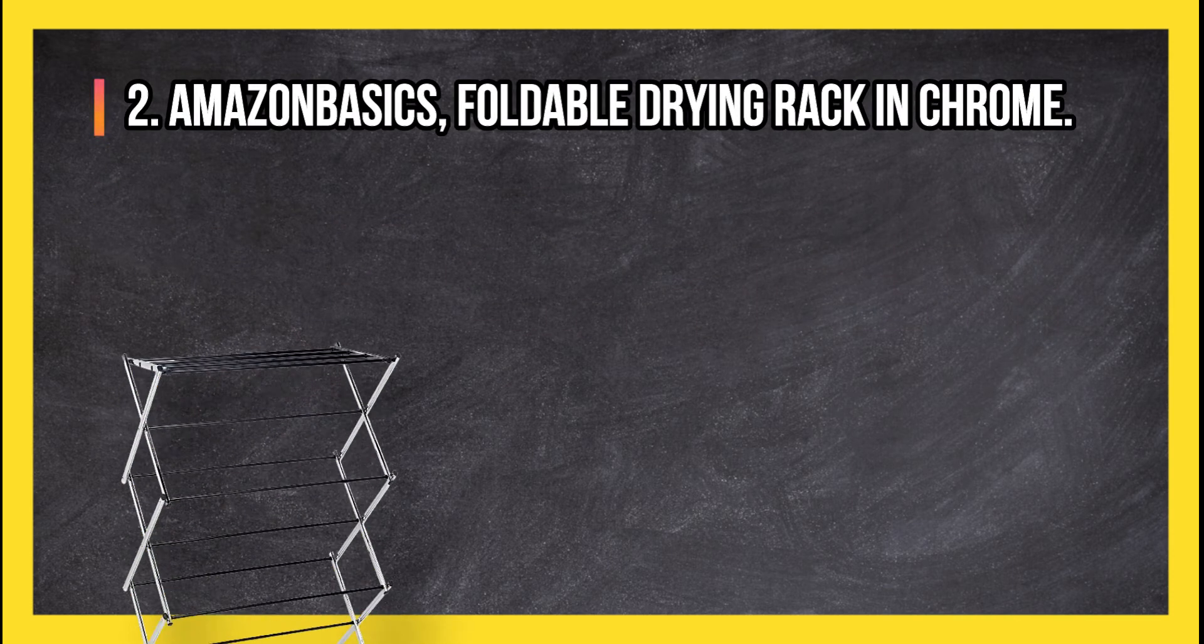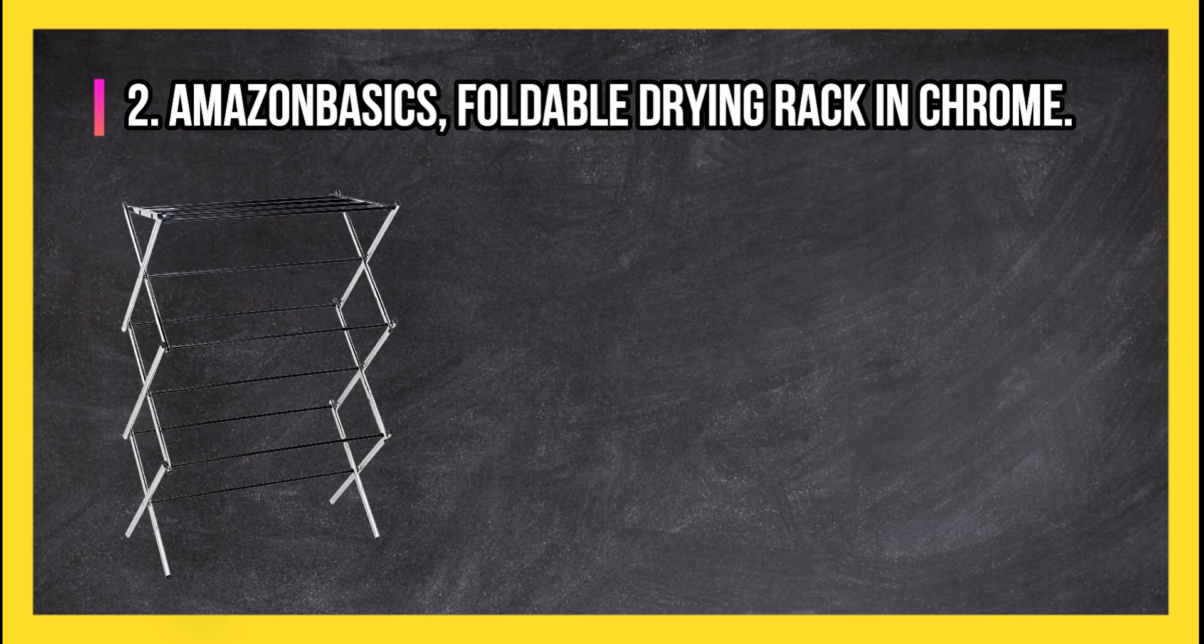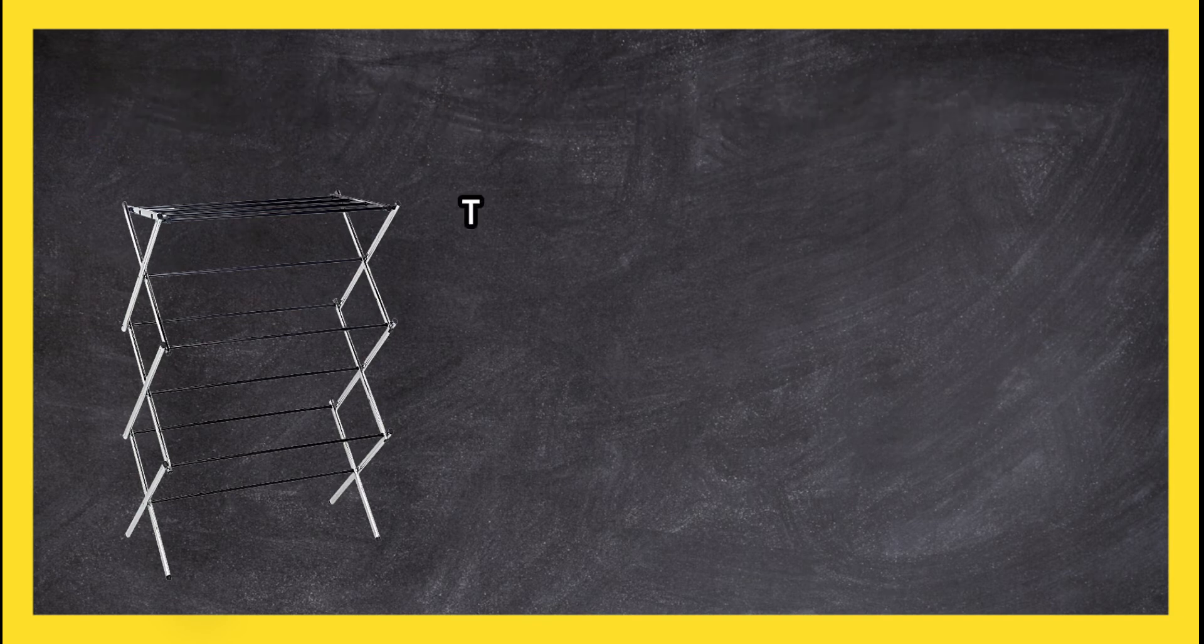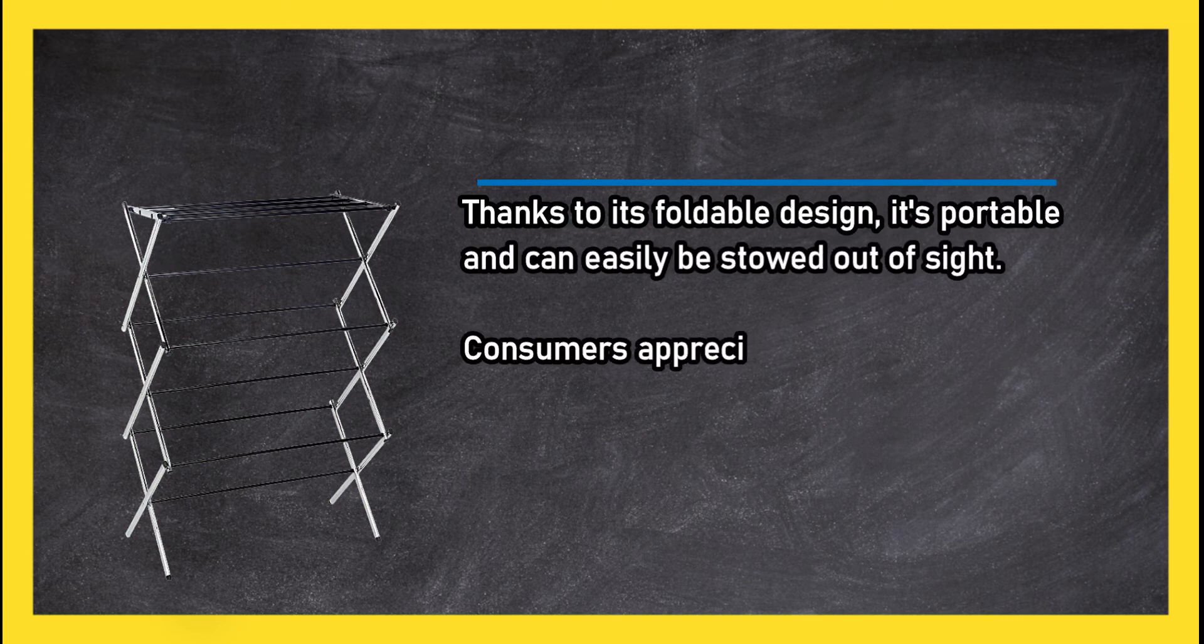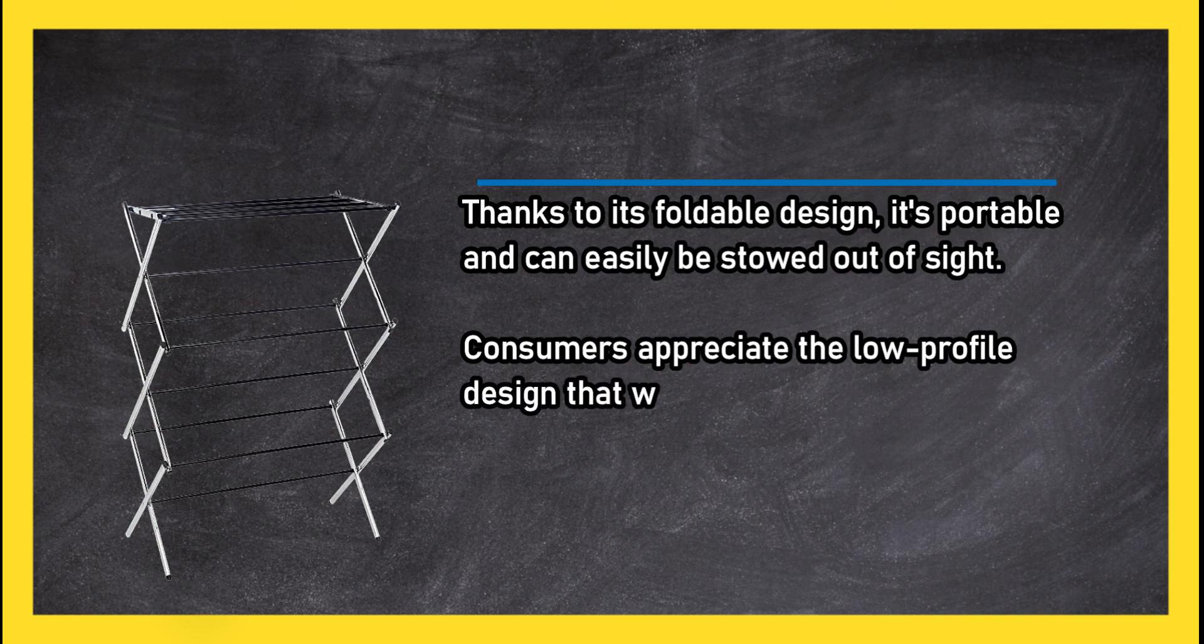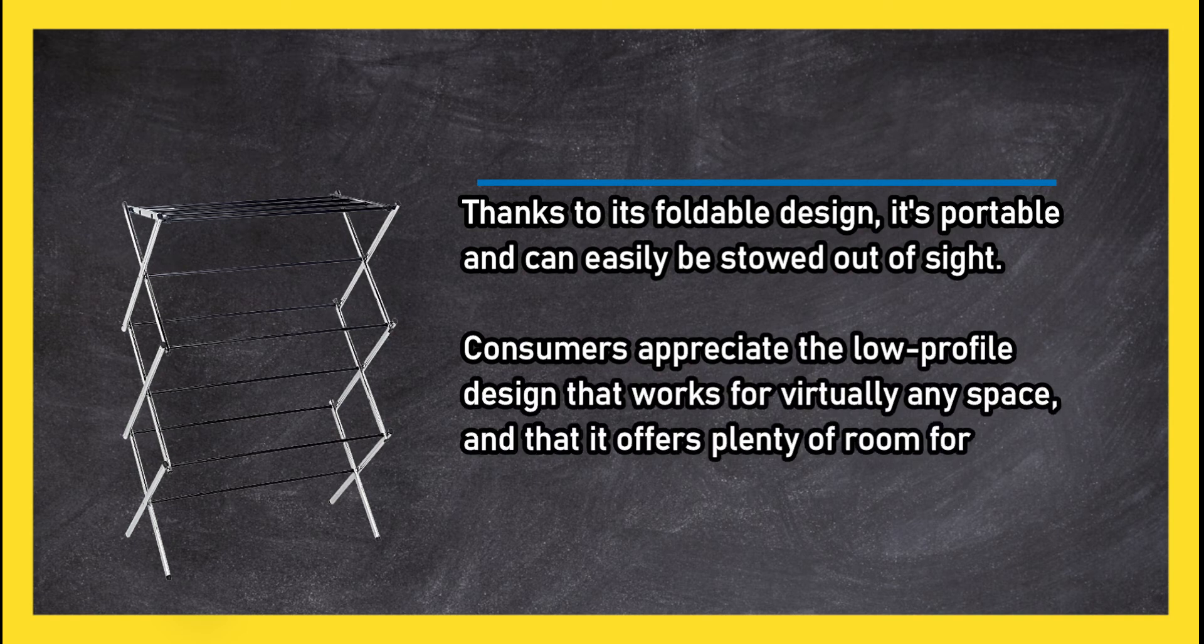At number two: Amazon Basics foldable drying rack in chrome. Thanks to its foldable design, it's portable and can easily be stowed out of sight. Consumers appreciate the low-profile design that works for virtually any space and that it offers plenty of room for drying multiple items.